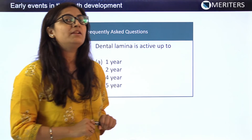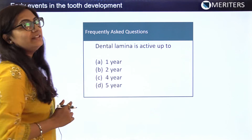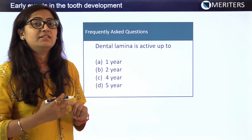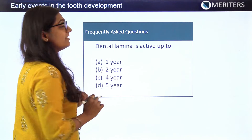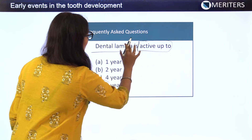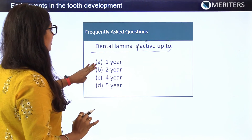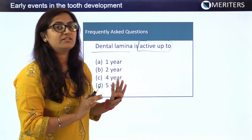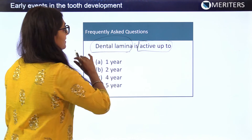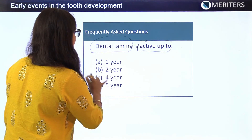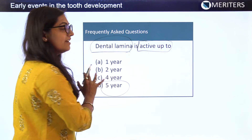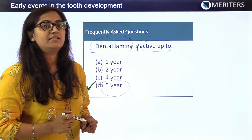Now for frequently asked MCQs on early events in tooth development. Question: Dental lamina is active up to how much period — 1 year, 2 years, 4 years, or 5 years? If you recall from the lecture, the successional lamina is active for at least 5 years. So the correct answer is 5 years. This is a direct question that allows you to score marks confidently.